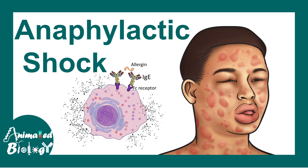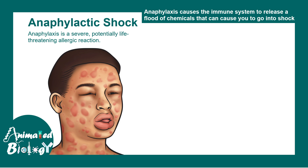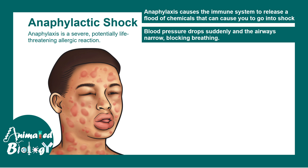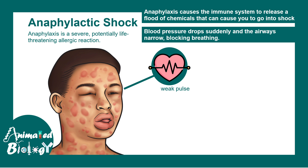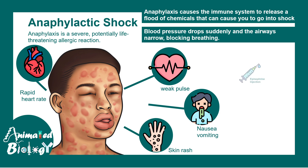Anaphylactic shock is a life-threatening severe allergic reaction that happens due to the immune system's release of certain chemicals in an uncontrolled fashion. In anaphylaxis, blood pressure drops and the airway becomes constricted, leading to difficulty breathing. The pulse becomes weak, heart rate becomes rapid, and there is a nauseous feeling with blister-like rashes on the skin. Immediate treatment is an epinephrine injection followed by a visit to the emergency room, as anaphylactic shock can relapse within 12 hours.